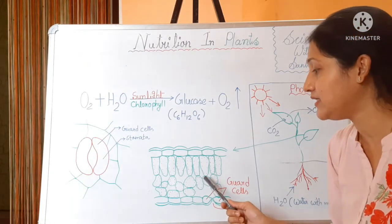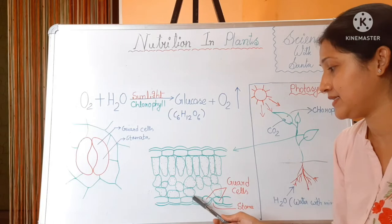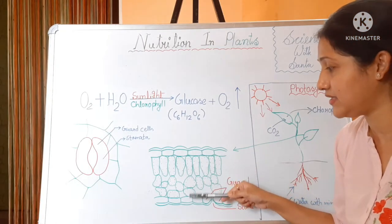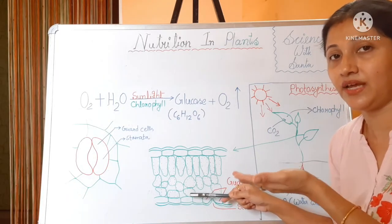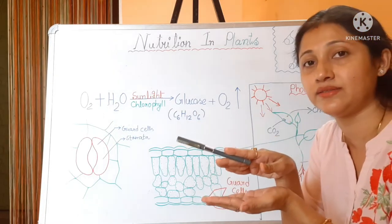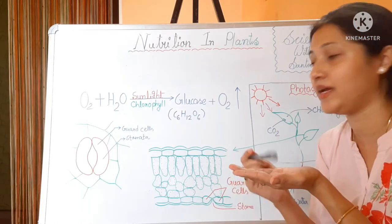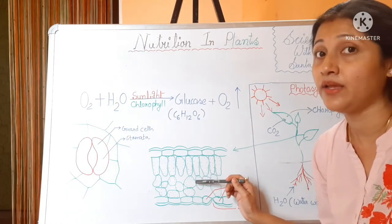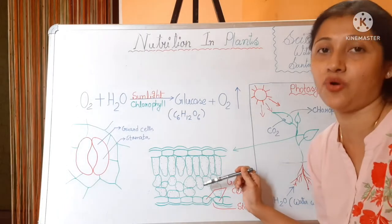After the elongated palisade parenchyma cells, there is a layer of spherical cells called spongy parenchyma cells. In these spongy parenchyma cells, there are also chloroplasts. Inside those chloroplasts, there is chlorophyll, so photosynthesis also occurs inside these cells. After the spongy parenchyma cells, there is again the lower epidermal layer. So from the upper epidermal covering, going through palisade and spongy parenchyma cells containing chloroplasts, we reach the lower epidermal surface. The actual photosynthesis occurs inside those chloroplast cell organelles.